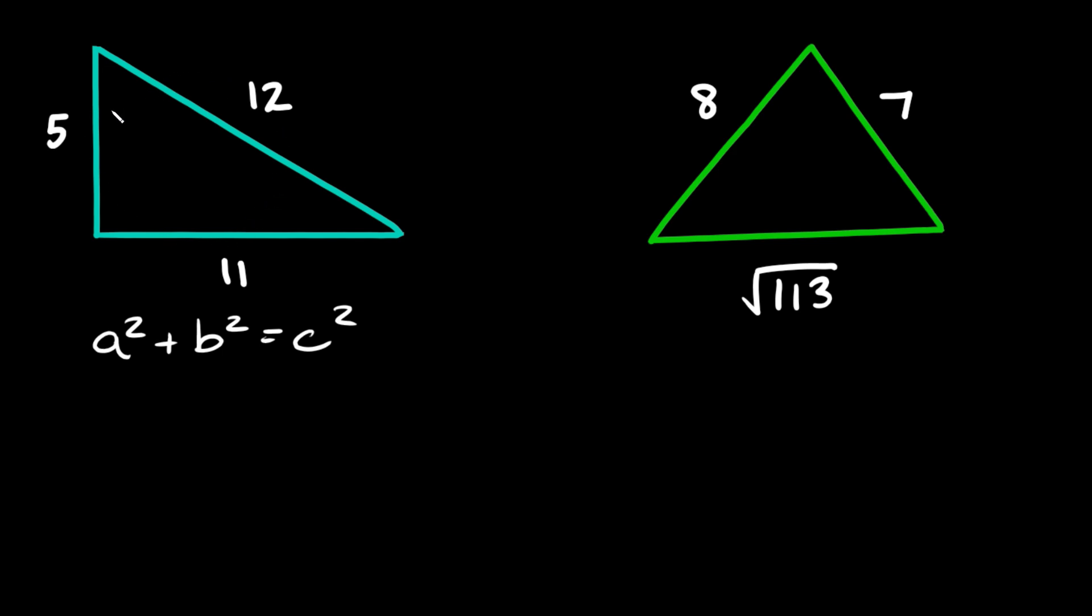Now if you plug in your three numbers, your three side lengths, into this Pythagorean theorem and you get a balanced equation, then that means the triangle is in fact a right triangle.